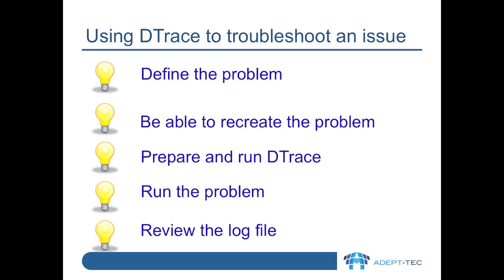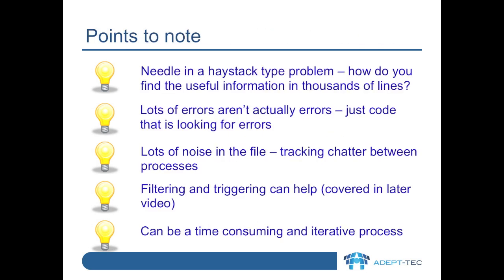You've got to be able to capture the trace and the problem in a reasonable space of time. It's very hard to capture a trace of a six hour archiving run — the files are huge. As we can see in subsequent videos, tracing a simple task such as an archiving run of a single mailbox can result in very large DTrace files.